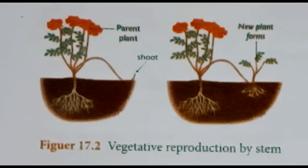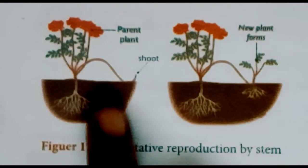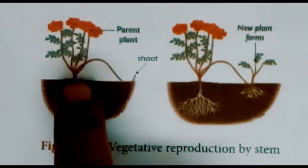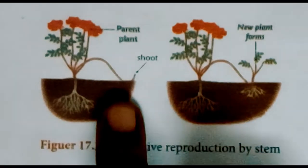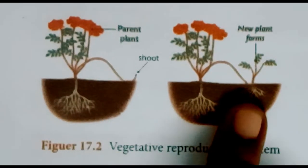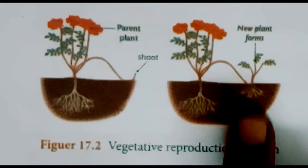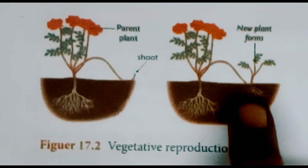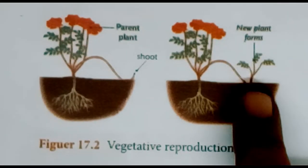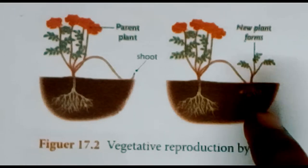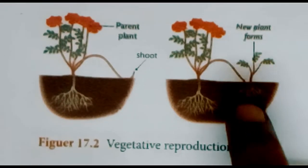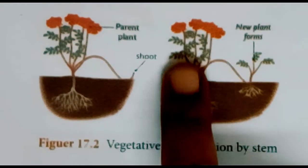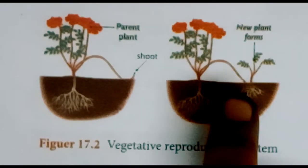Next is vegetative reproduction through stem. The example is the strawberry plant. The weak stem that grows will touch the ground and give off adventitious roots. Towards the ground it gives roots, and towards the top it develops aerial buds. When this plant grows to enough size, the connection can be cut off from the parent plant and the offspring becomes an independent plant.